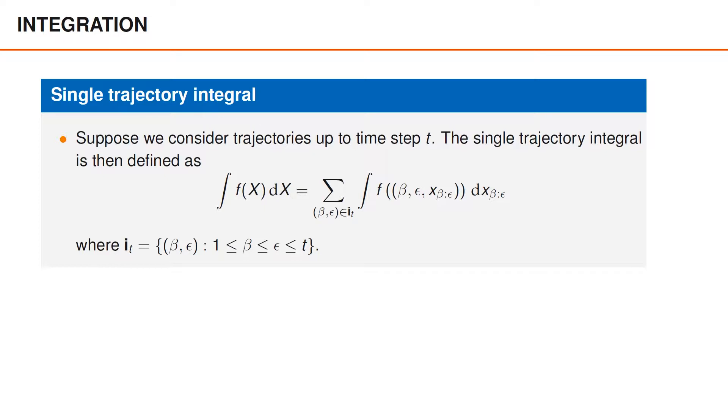One aspect that we learned about when we studied random finite sets was integrals. In those videos we assumed that the elements were vectors in Euclidean space, whereas the elements are now trajectories. To define an integral over sets of trajectories, we first need to define an integral over a single trajectory. For technical reasons we only consider trajectories of finite length, say up to some time t.